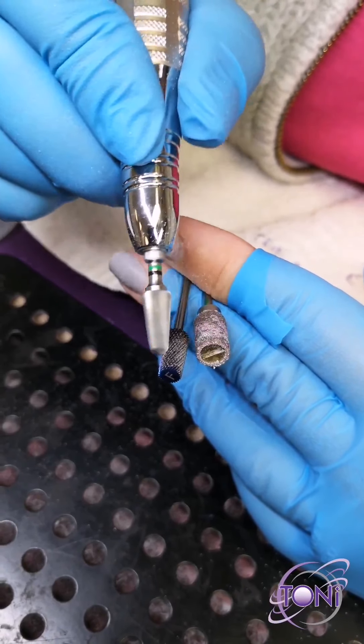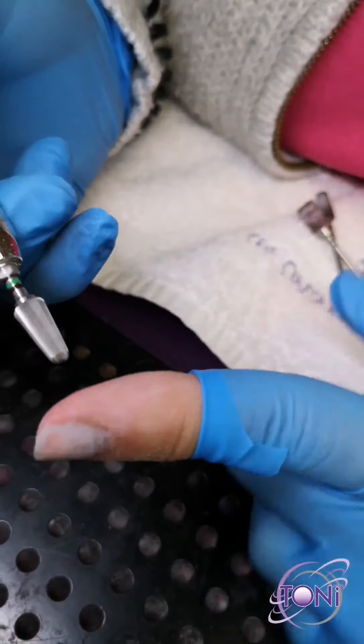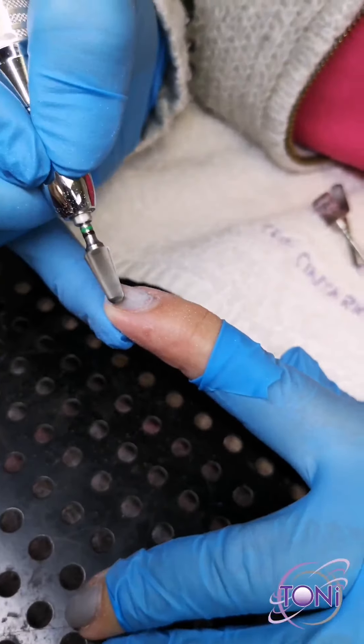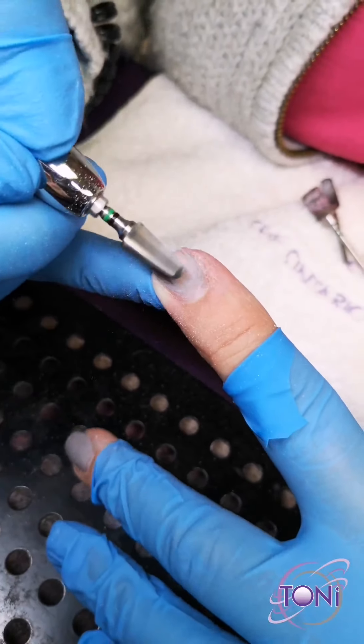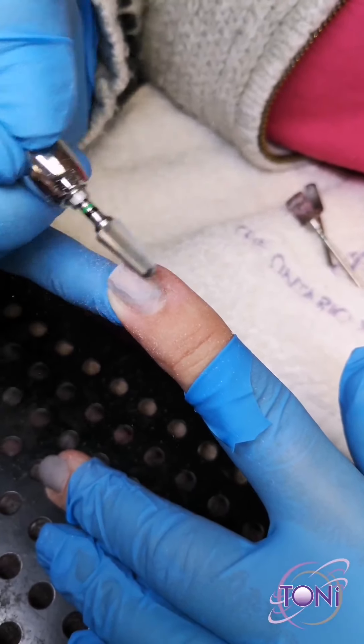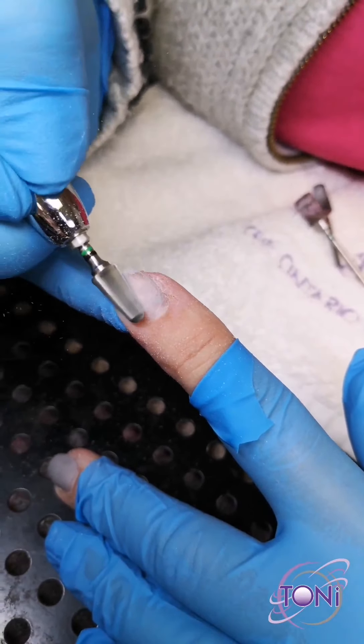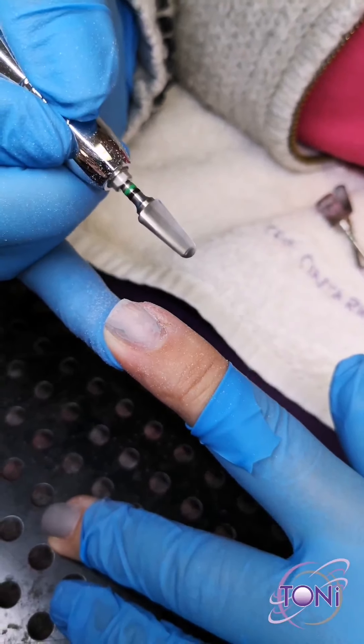When you work with that straight edge, as opposed to this rounded edge, you have potential of damaging the natural nail because this edge can dig into the nail plate. Whereas when I'm working with this edge, I can get right up close and go right along and I won't dig into the nail plate. That's why this is actually my favorite. Your gel polish comes off quick as can be.